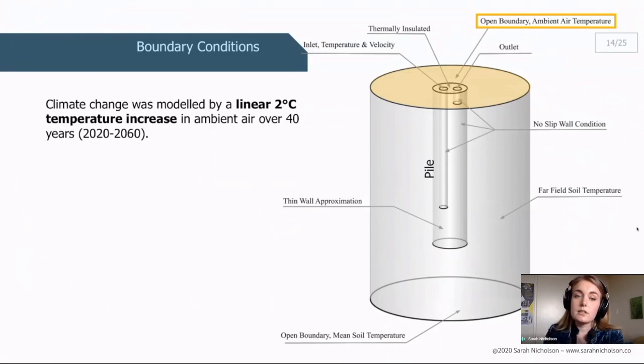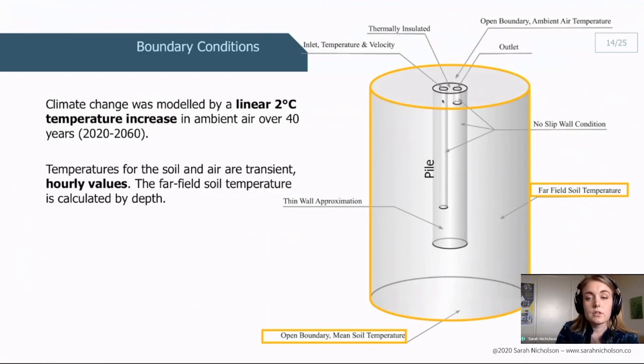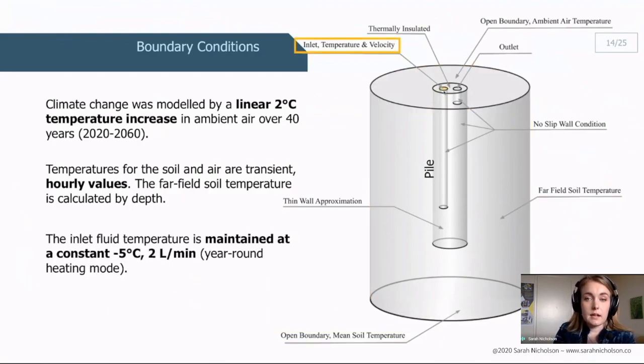The boundary conditions that I input to my model are shown here with the pile in the center and to apply the climate change for the study on permafrost. I used a transient set of data here where the ambient air temperature increased linearly at a constant rate over 40 years by 2 degrees which is that predicted value. This increase in ambient air temperature then affected the far-field soil temperatures using a calculation of soil temperature by depth and time. This is also a transient input. The heating dominant load that I applied for this case was a constant minus 5 degrees Celsius at 2 liters a minute flow rate.